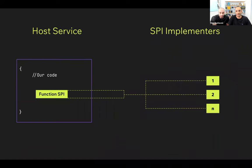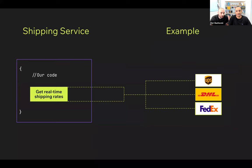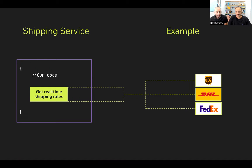We will call all of the SPI implementers one by one, get the responses, and then continue with our code. For example, if we were talking about shipping, we can call the implementers of this SPI — different shipping carriers that can provide shipping options for a specific cart, such as UPS, DHL, FedEx.